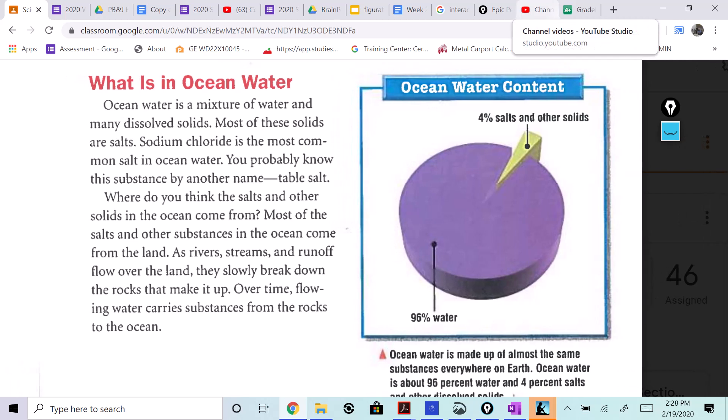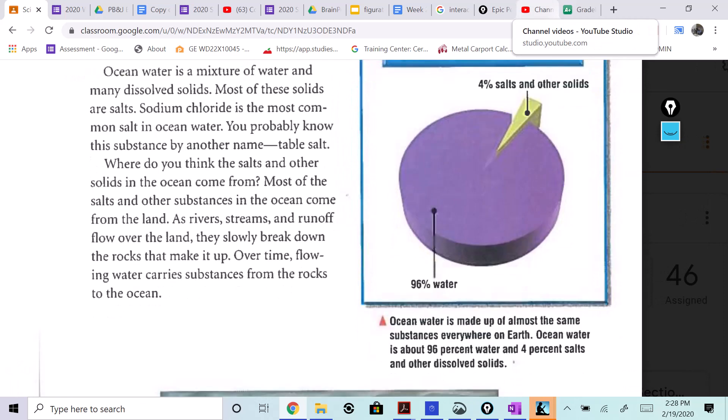So what is in ocean water? Ocean water is a mixture of water and many dissolved solids. Most of these solids are salts. Sodium chloride is the most common salt in ocean water. You probably know this substance by another name - table salt.